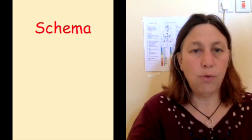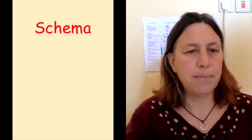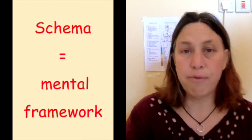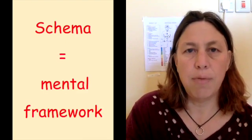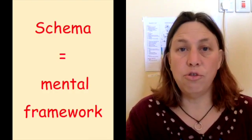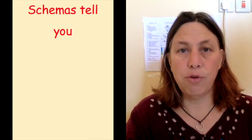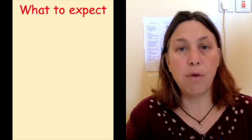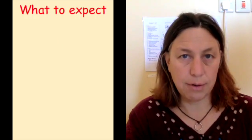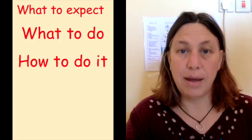We also have schemas. Schemas are mental frameworks around a theme that tell us what to do, how to do it, and what to expect. For example, we all have schemas of how to shop in a supermarket. When we have fully automated supermarkets, our schemas will be dated and it may take some time to change that schema.